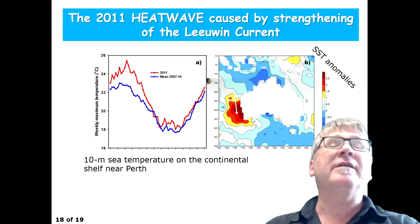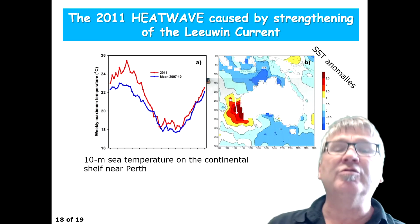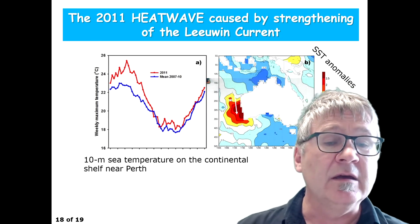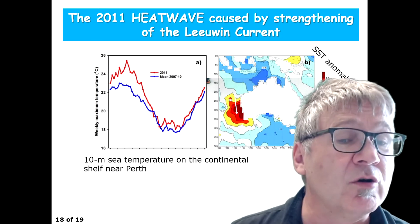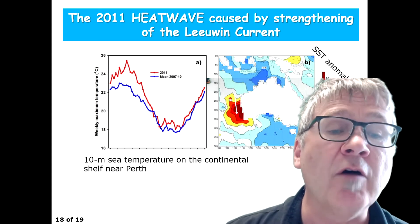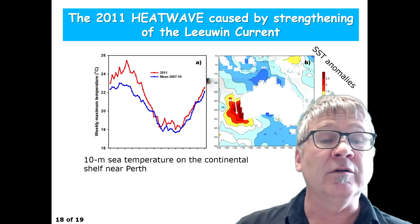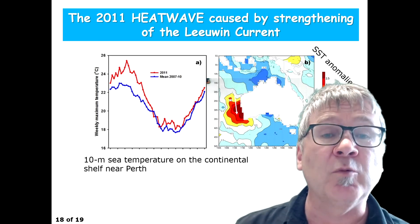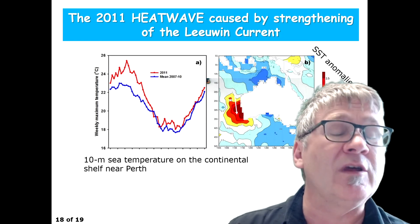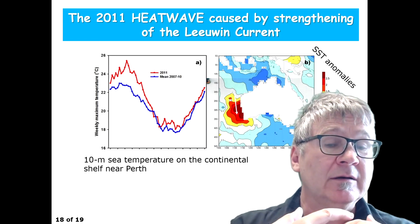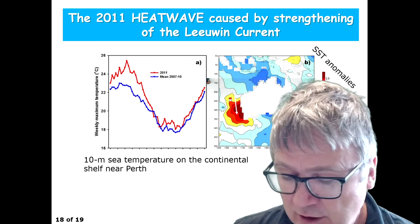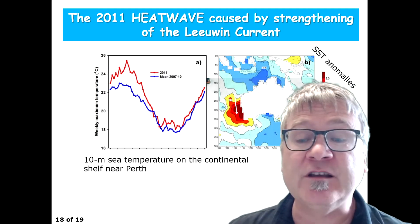The other thing worth mentioning is that the Lewin current is actually indirectly produced by the wind — not by the coastal wind, but by winds to the north of Australia, over the northwest shelf in the Arafura Sea. That actually creates the Lewin current, which is a year-round feature.